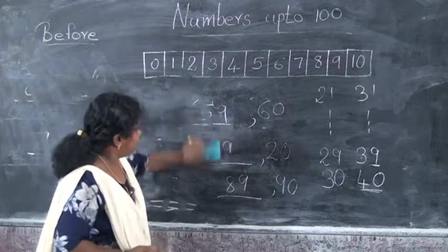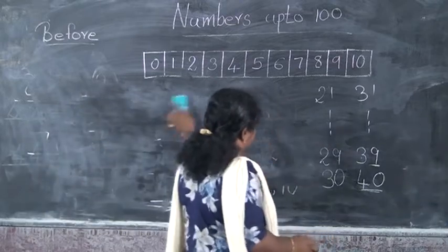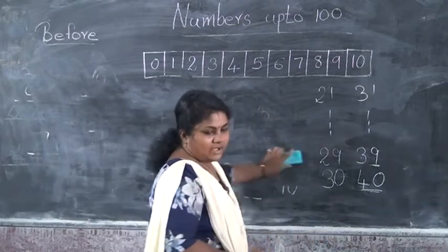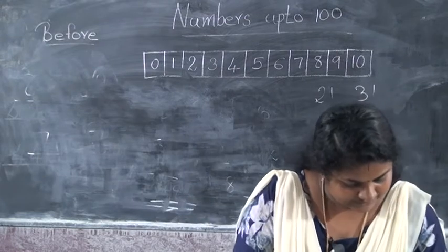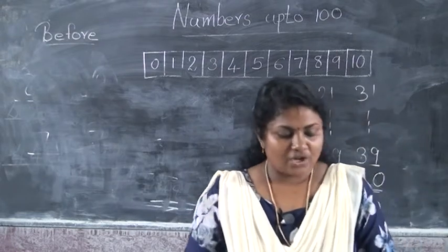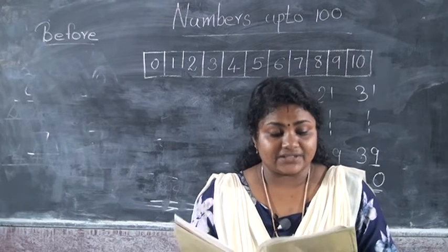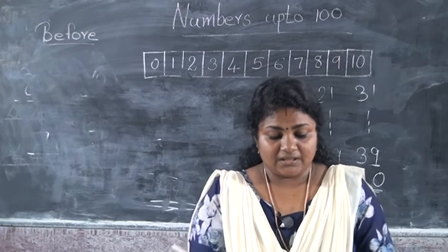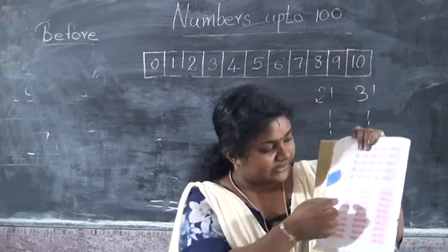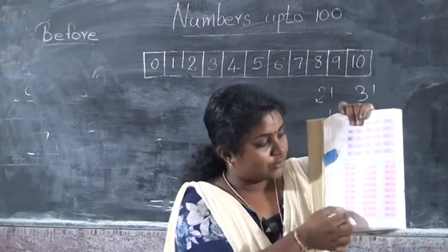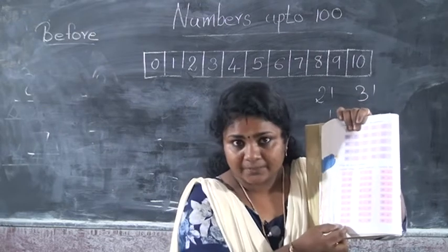I think all understood before numbers. In your textbook, you have to do some questions on page number 56. Write the correct numbers. There you can see 3 columns. In the first column, you have to write numbers before.